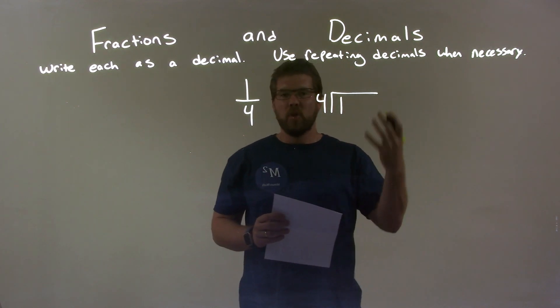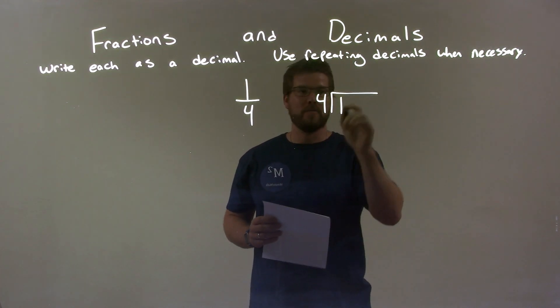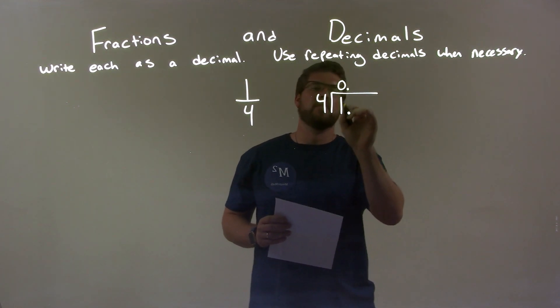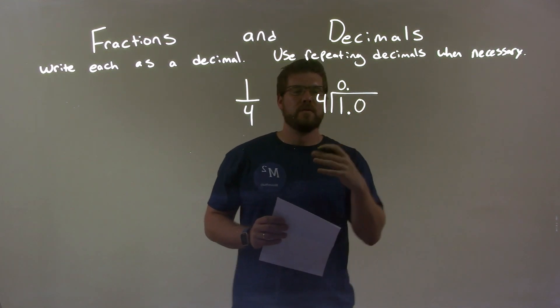because one is smaller than four, right? So I'm going to put a zero on top, and we have a decimal there. Now we're going to add another zero to this one. So one point zero, or ten.